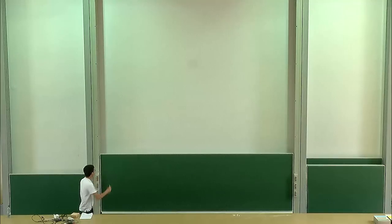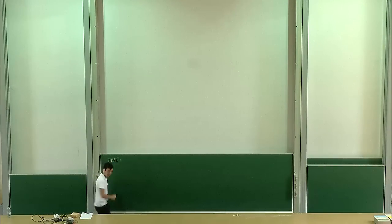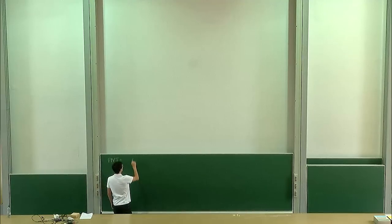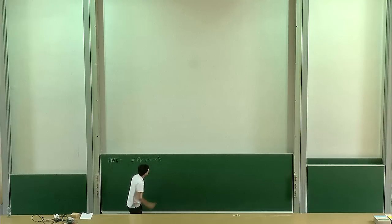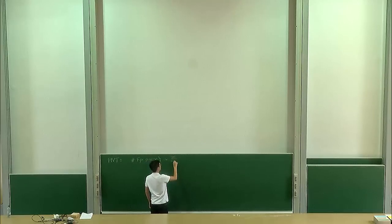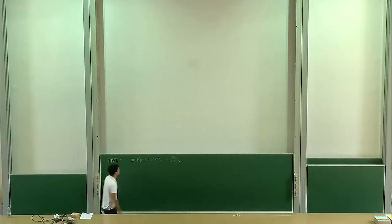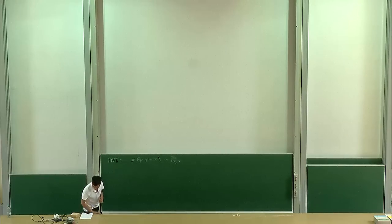Since there are a lot of people in the audience who are not from that background, I've decided to review a lot of things. The starting point here is going to be the prime number theorem, which you should all know, even those who are not analytic number theorists: the number of prime numbers less than any large number x is asymptotic to x over log x, as x goes to infinity.